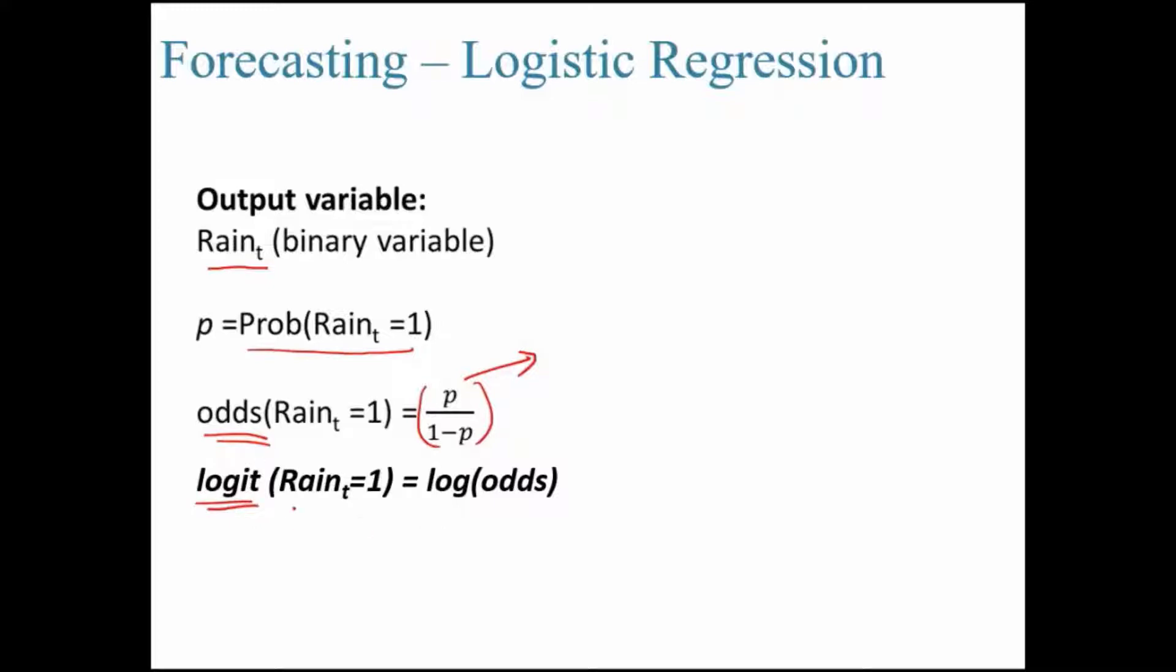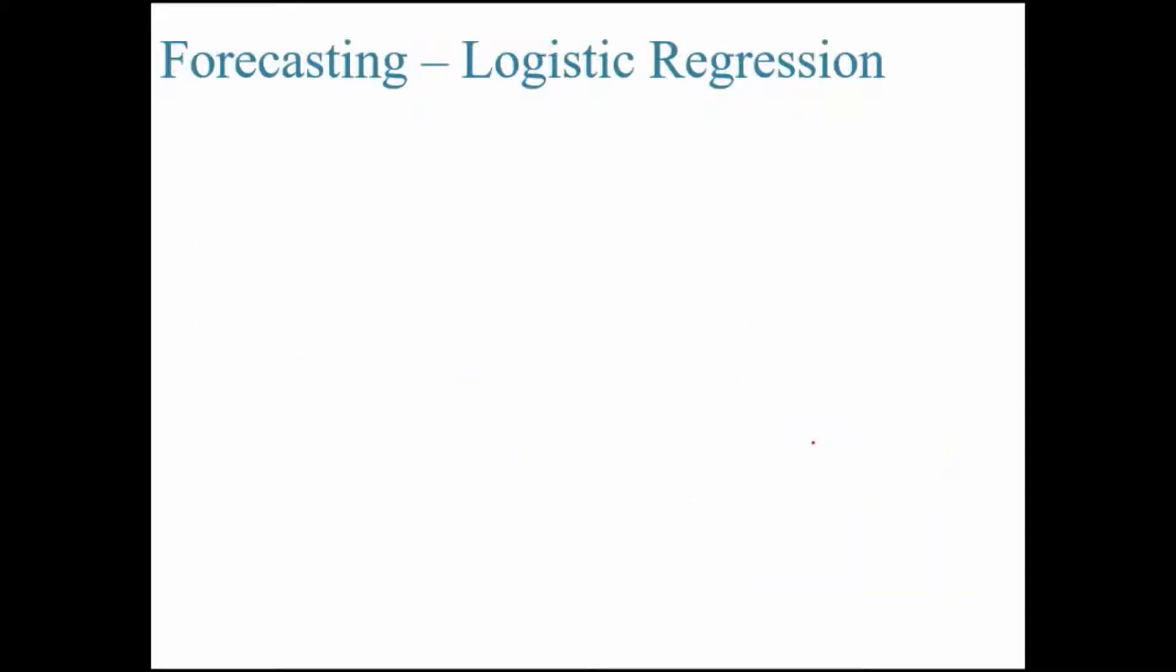Remember, the output would be logit. However, when we draw inferences, it will be on odds. Or you can directly look at the probability values also. These are the S curves. There is a sigmoid curve. In the logistic regression on cross-sectional data, we have already discussed these things. So I'll proceed further.